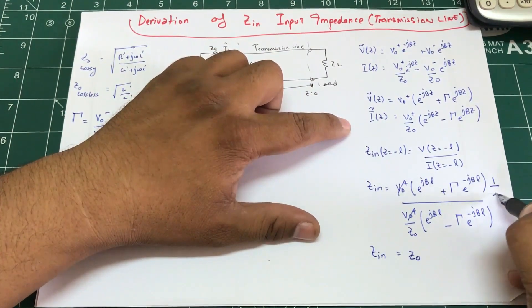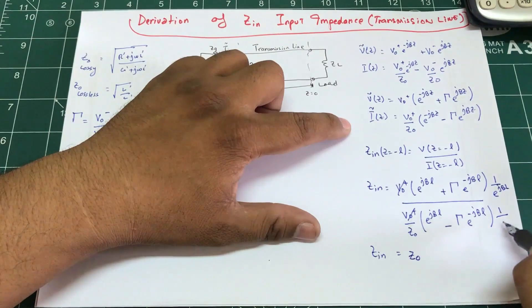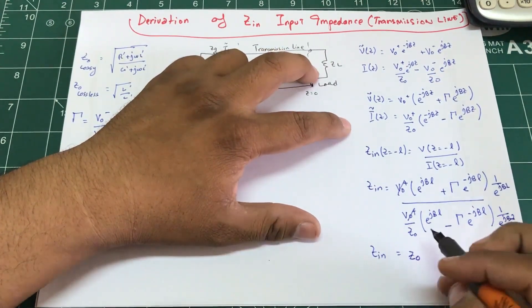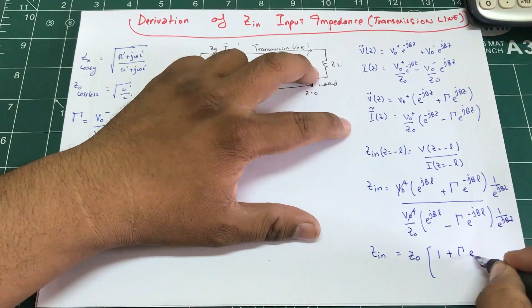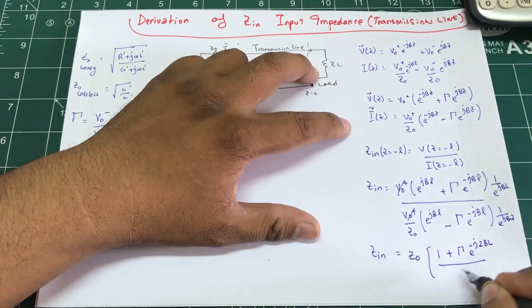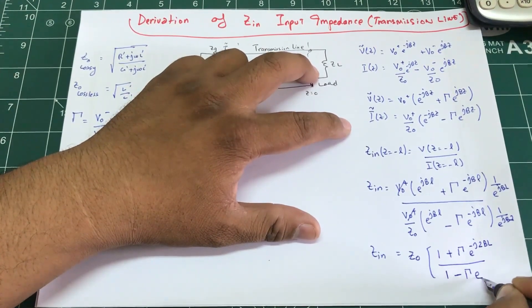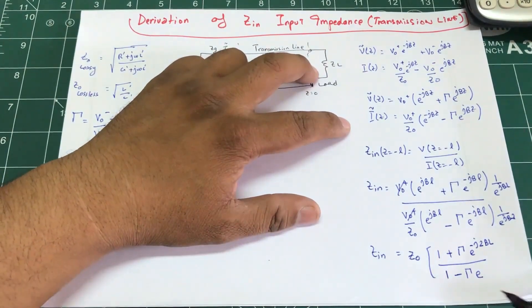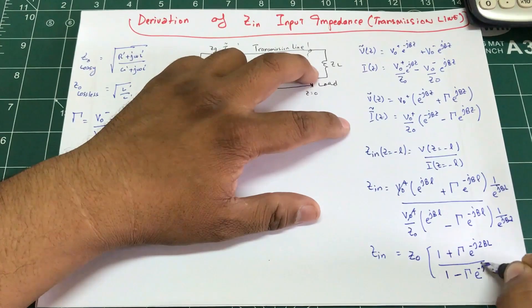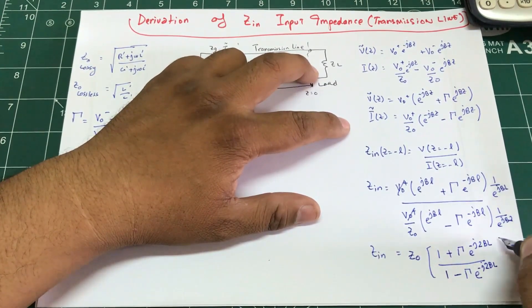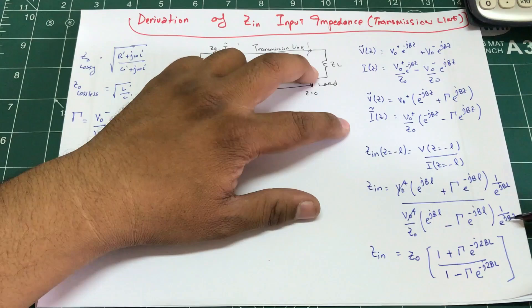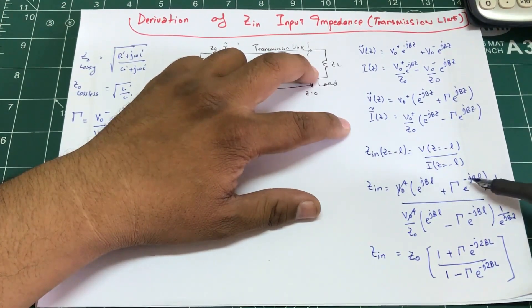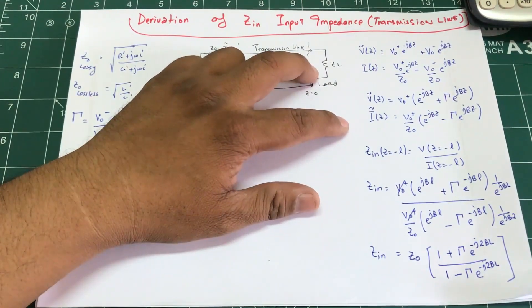Dividing both numerator and denominator by e^(jβL), the expression simplifies to Z_in = Z₀ · [1 + Γ e^(−2jβL)] / [1 − Γ e^(−2jβL)].